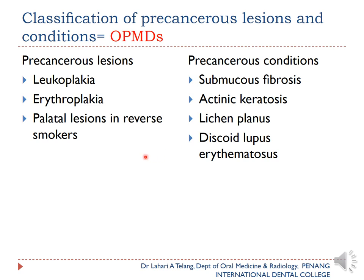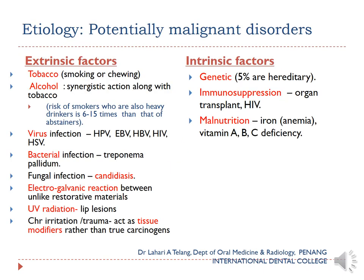Previously, precancerous lesions included leukoplakia, erythroplakia, and palatal lesions in reverse smoking, while conditions affecting larger areas included submucous fibrosis, actinic keratosis, lichen planus, and discoid lupus erythematosus. Now we categorize all of these together as one common group called OPMDs — oral potentially malignant disorders.